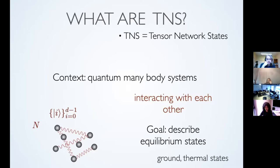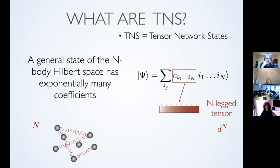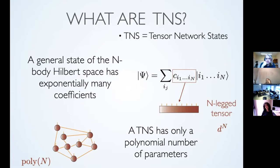We can restrict our search to families of states that have only a polynomial number of parameters in the number of constituents. Instead of considering the most general coefficients — which have exponential cost — we consider coefficients that have some structure in terms of a tensor network. We have smaller tensors with fewer parameters, contracted in a particular pattern that defines the properties of our family. This gives families of states that can be dealt with efficiently.